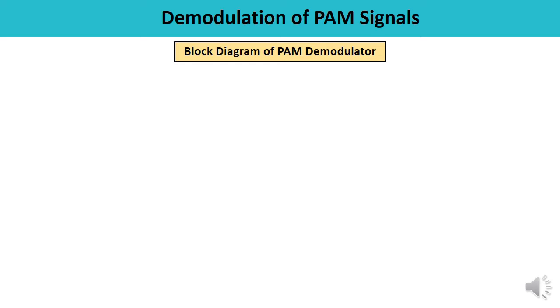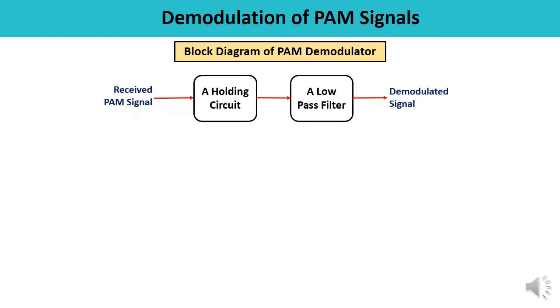Now let us understand how demodulation of PAM signals is done. Demodulation is the reverse process of modulation in which the modulating signal is recovered back from the modulated signal. For pulse amplitude modulated signals, demodulation is done by using a holding circuit. Let us draw a block diagram of a PAM demodulator — it consists of a holding circuit and a low pass filter.